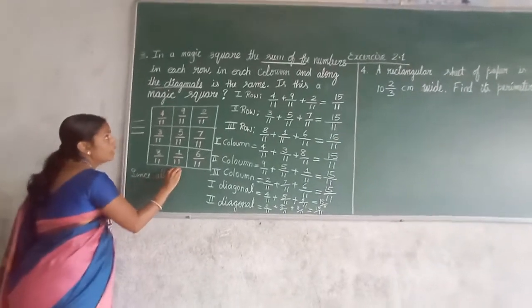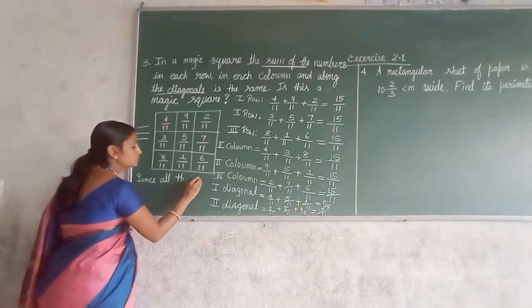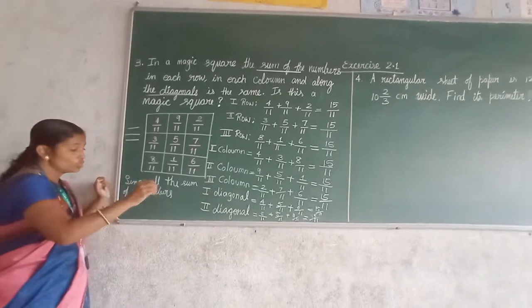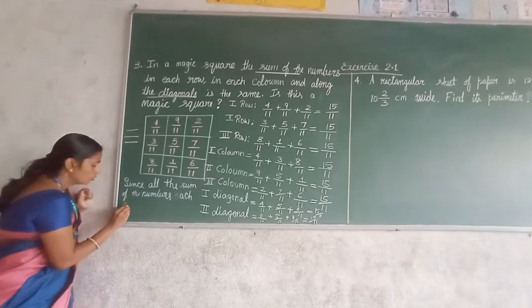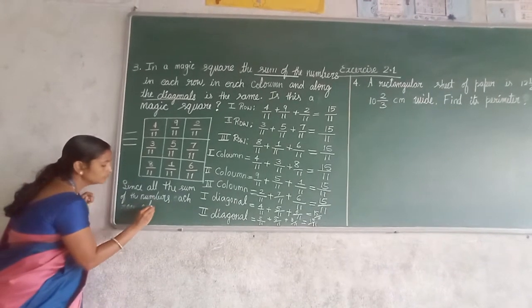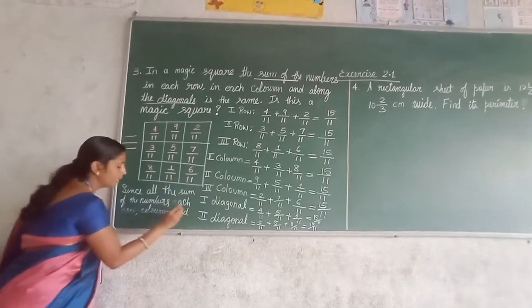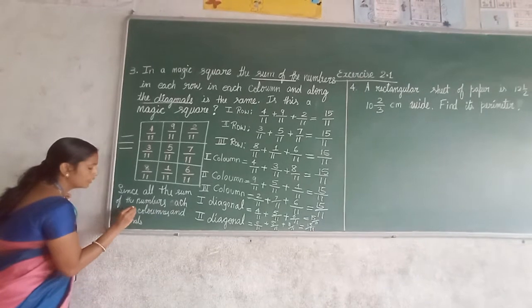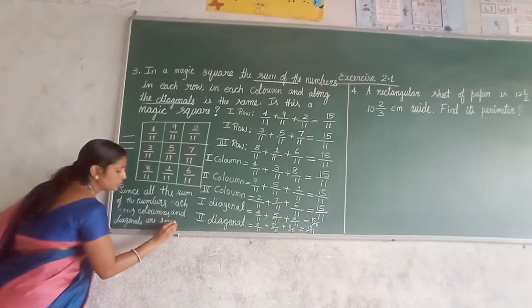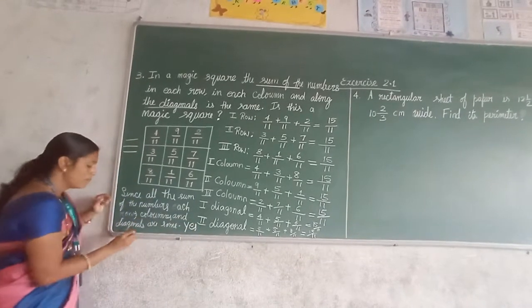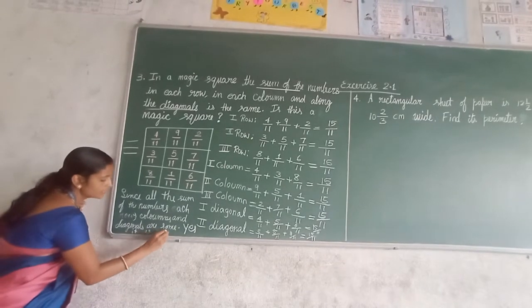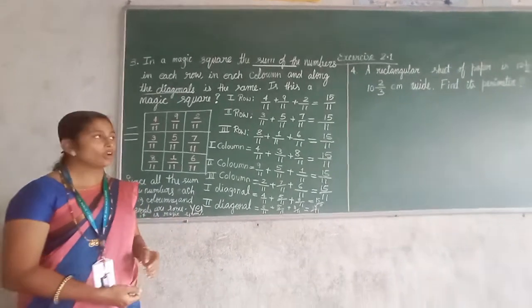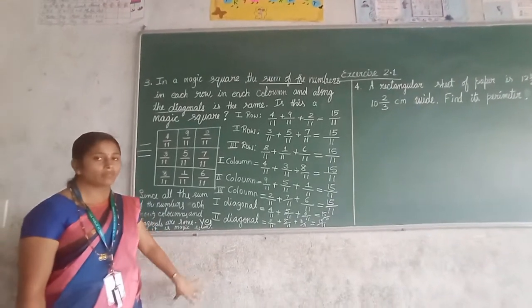So since you write that, since all the sum of the numbers in each row, each column and diagonal are same, so it is magic square. Yes. It is magic square. You have to conclude that. If you write in this way, every step will be completed. Otherwise, your steps will not be completed.